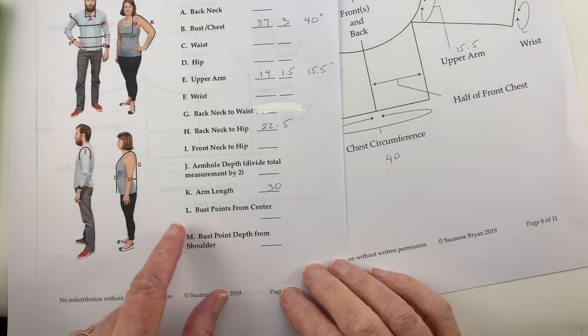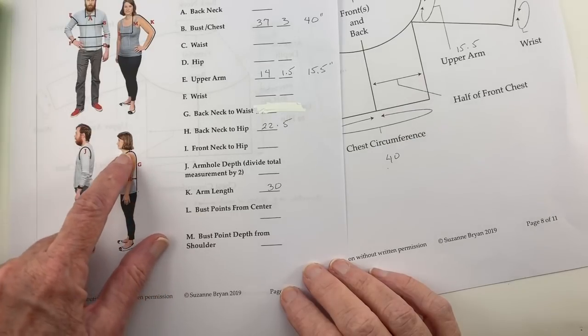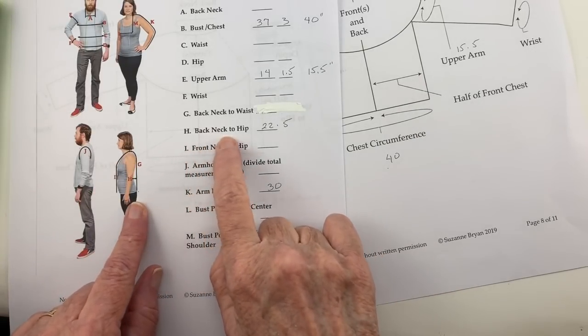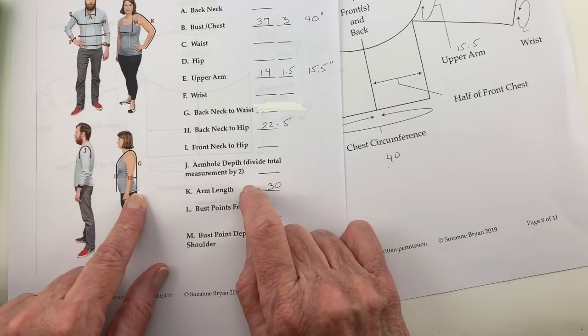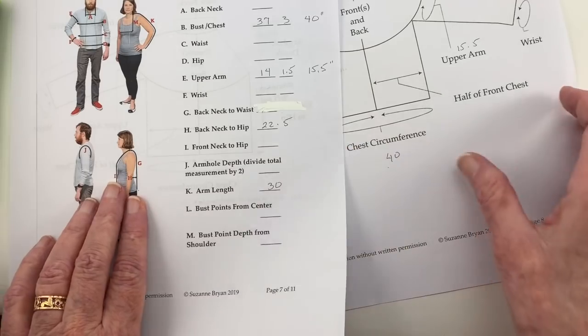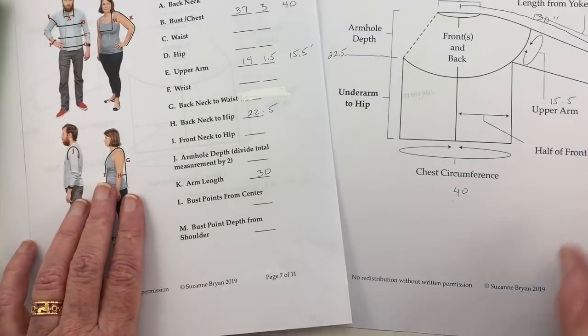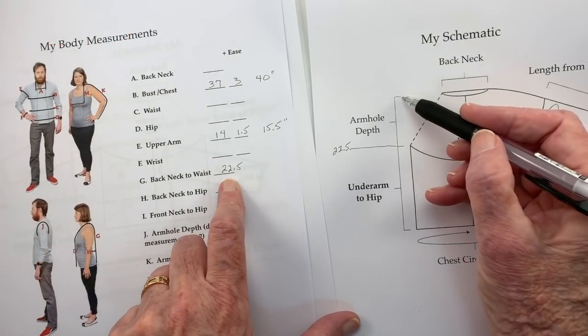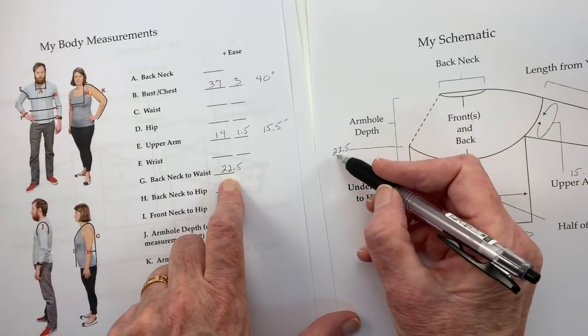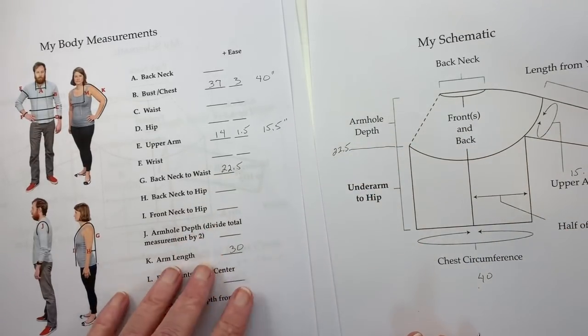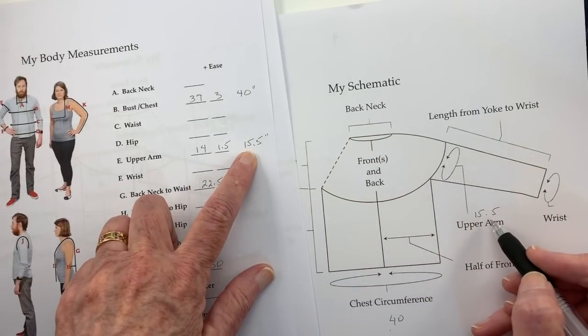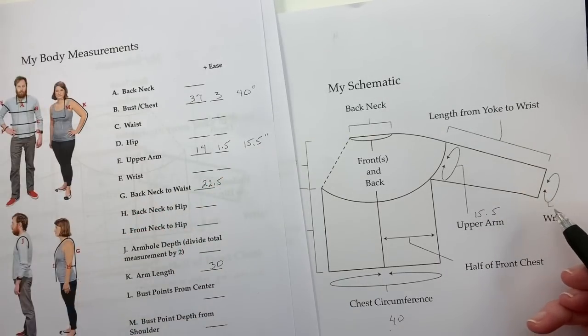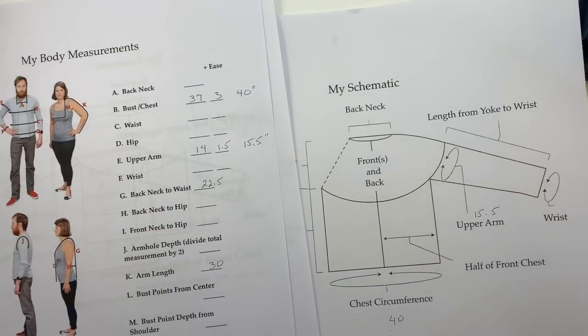The next thing I'm going to need is the back neck to hip, which is H on this diagram, which is 22.5. So that's from here to here, on this diagram, I wrote in 22.5. Then I need my upper arm circumference, that's right here, and I wrote it in here. I'm not going to put my wrist circumference in, and I'll tell you why in just a minute. So really, these are the only numbers that you need.